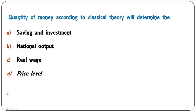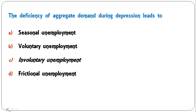Next question: according to classical theory, quantity of money will determine saving and investment, national output, real wage, or price level? It is the price level which is largely influenced by quantity of money in classical theory. So D is the correct answer.